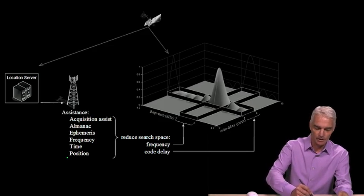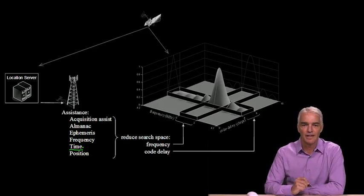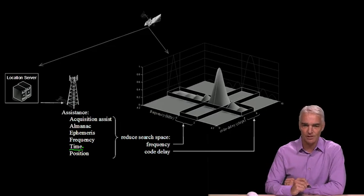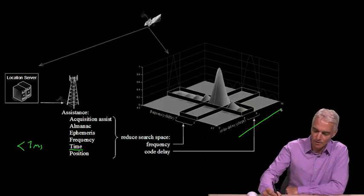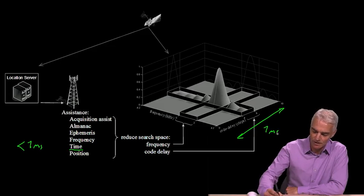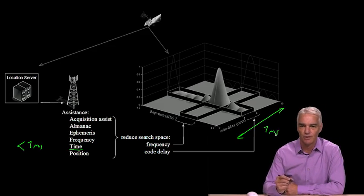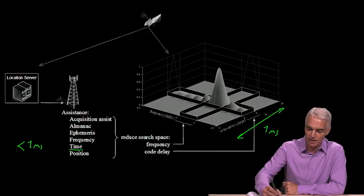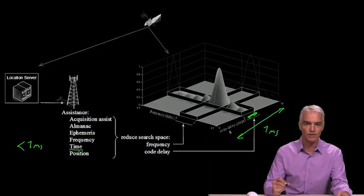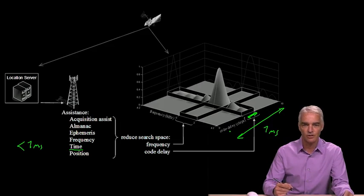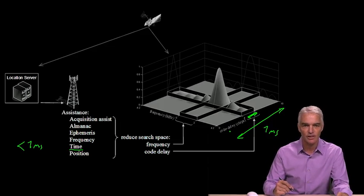Let's begin with time. So the cell tower can tell you what time it is. And if it knows that time very precisely, i.e., to better than a millisecond, then this space, remember, is the code delay. This is one millisecond. That's how much the PRN code can change before it repeats itself. So if time is known to better than a millisecond, then you can reduce that search space to a much smaller space and your GPS doesn't have to search so much time. So that's the simplest one to understand. Also the hardest one to implement because for a cell tower to be synchronized to within a millisecond of GPS is not necessarily the case. In fact, most cell towers are not synchronized to that accuracy today.